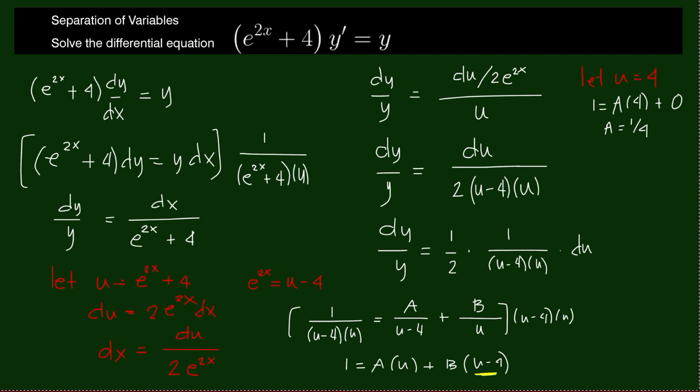If we let u equals 0, this one becomes 0. So we will have 1 equals 0 plus b times negative 4, and that gives us b equals negative 1 fourth.